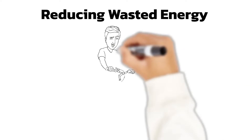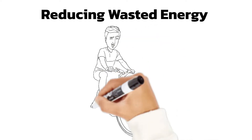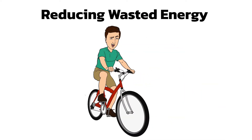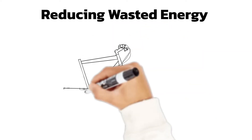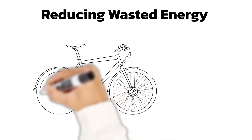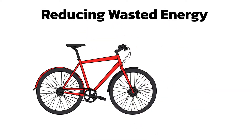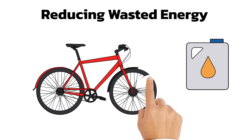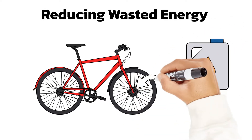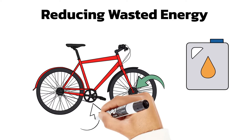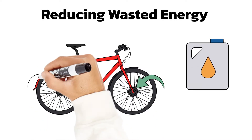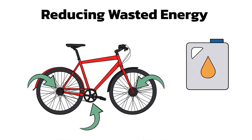When you ride your bike, you push down on the pedals and you want all your energy to make the bike go faster by increasing the kinetic energy store. But friction between all the moving parts causes some of your energy to be wasted heating up the different parts of the bike. This can be reduced by using oil to lubricate all the moving parts. The oil reduces friction and so less energy is wasted, so the bike will go faster.